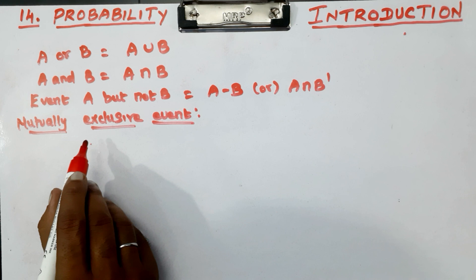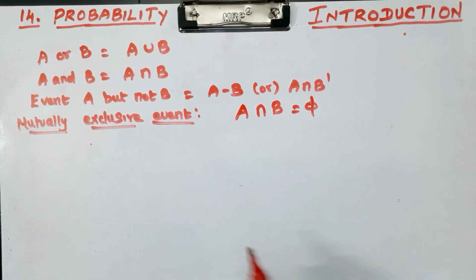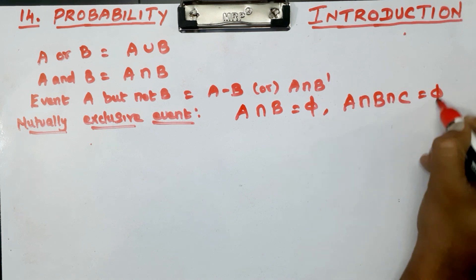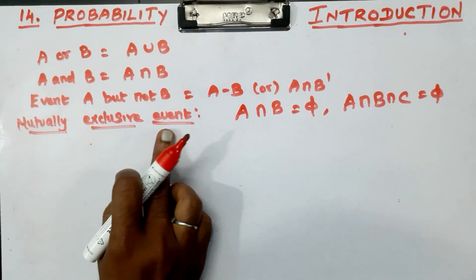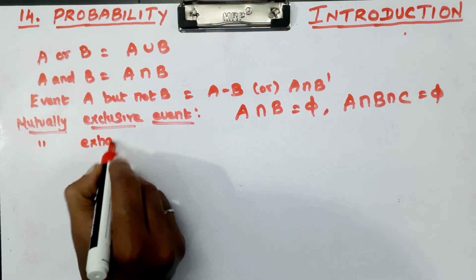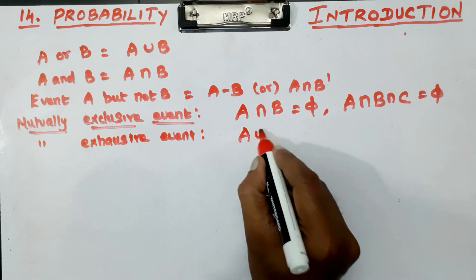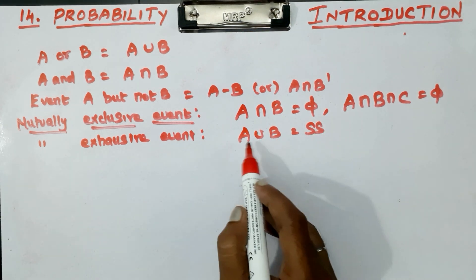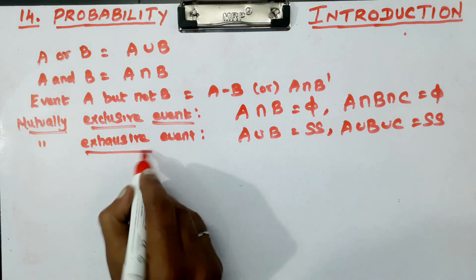Next is the mutually exclusive event - this is really important. For events A, B, C, if you take their intersection and there is no common element, meaning A∩B equals the empty set, then they are called mutually exclusive events. If A, B, C together cover the entire sample space with no overlap, they are mutually exclusive and exhaustive events.